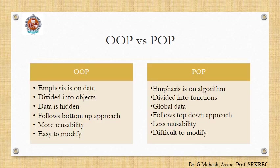Let us compare OOPS and POP (Procedure-Oriented Programming). In OOPS, emphasis is on data; in POP, emphasis is on algorithm. In OOPS, the program is divided into objects; in POP, the program is divided into functions. In OOPS, data is hidden and safe; in POP, global data is used. In OOPS, a bottom-up approach is followed; in POP, a top-down approach is followed. More reusability is present in OOPS because of inheritance and polymorphism, whereas in POP, less reusability exists as it does not have such mechanisms.